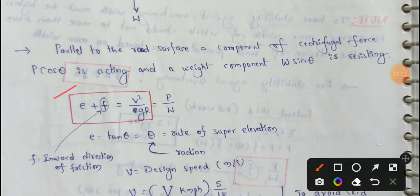This formula e plus f equal to v square by gr. This is centrifugal force ratio p by w. f means inward direction of friction.